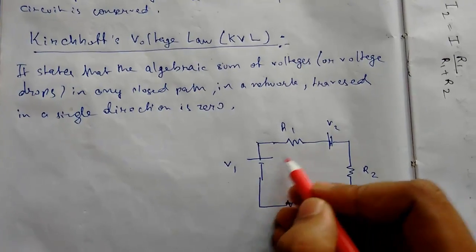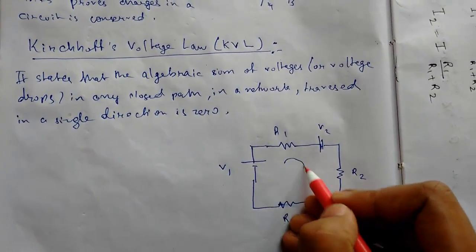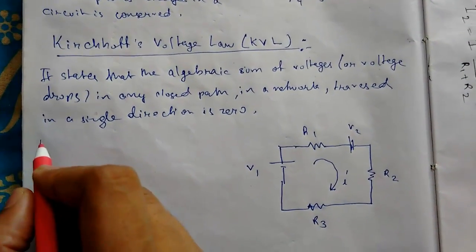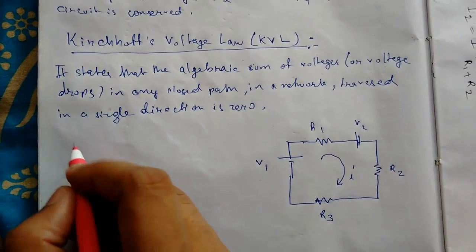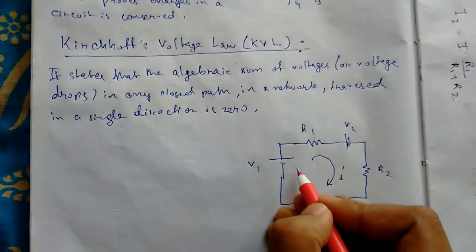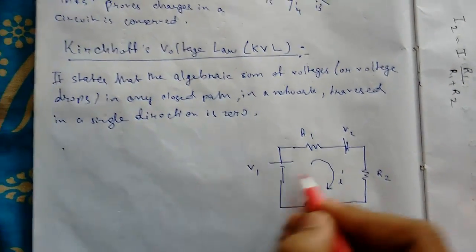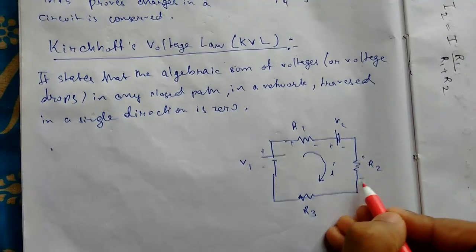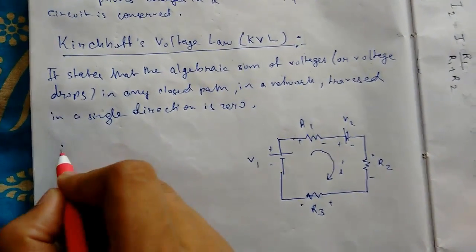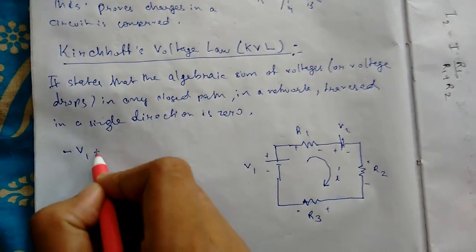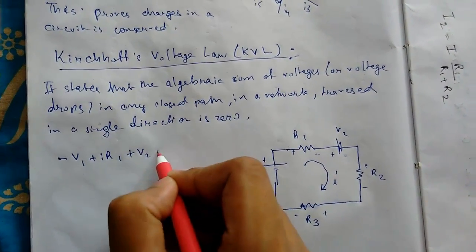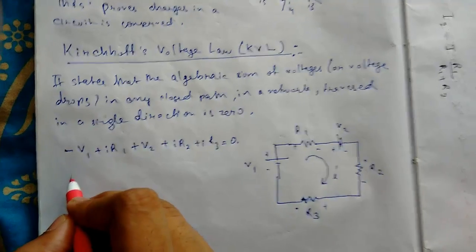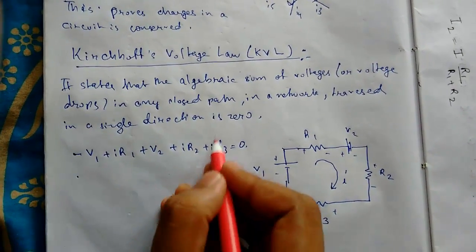To use KVL, we assume the direction of current to be clockwise, labeled i. With current flowing in this direction, we assign polarities and write: V − V1 + IR1 + V2 + IR2 + IR3 = 0. This is Kirchhoff's voltage law.